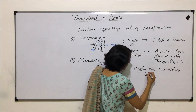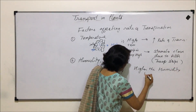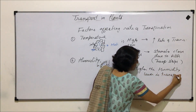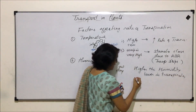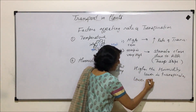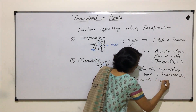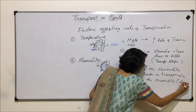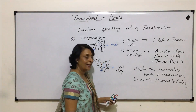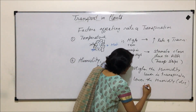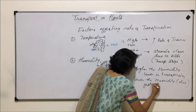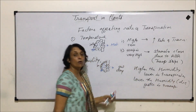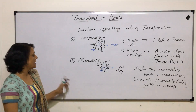Higher humidity means slower or lower transpiration rate. Lower humidity means the air is dry, so faster transpiration. Humidity therefore also affects the rate of transpiration.